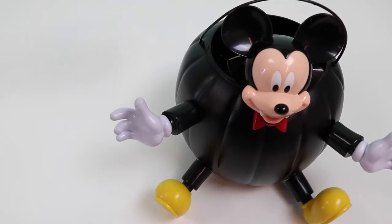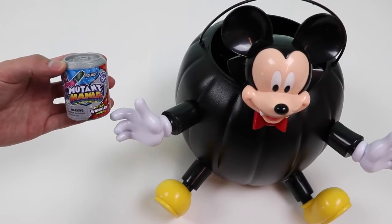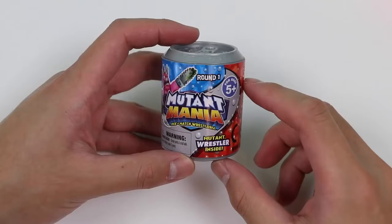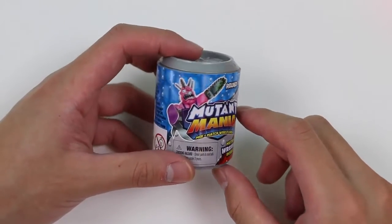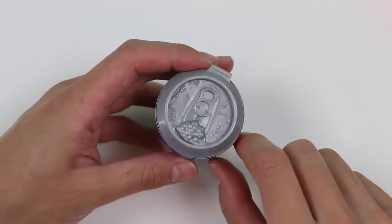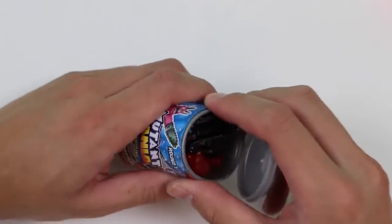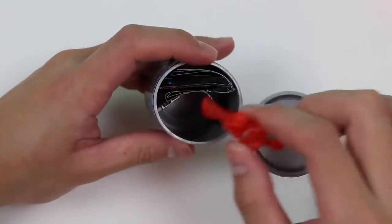Up next we got a Mutant Mania surprise toy! Whoa! Check out this wrestler! He's got a chainsaw for his hands! Don't want to mess with that guy! And these surprise toys come in a soda can! Let's pop it open and see who we got!